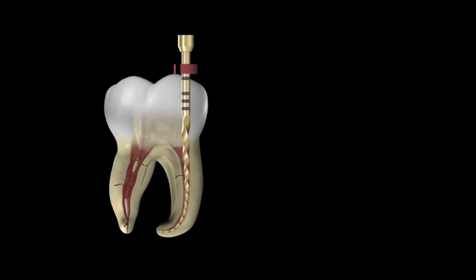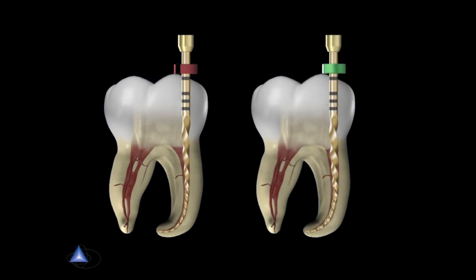What if the primary file goes to length easily, you withdraw it, there's no debris on its flutes, you grab a 25.02 nickel-titanium gauging file, and it also is loose at length? That simply means the terminus of the canal is larger than the file. So in these instances, we would go up to the medium — that's a 35.06, so the D0 diameter is 35 and its taper is 6%. When that file comes out, you're looking for debris on its apical flutes.